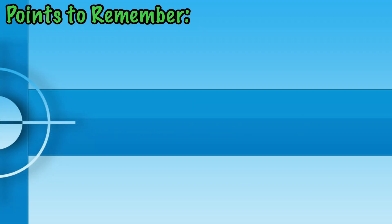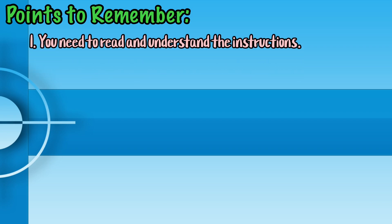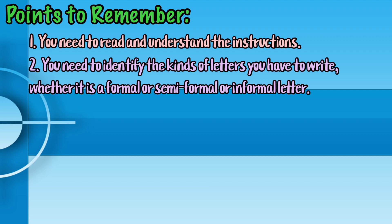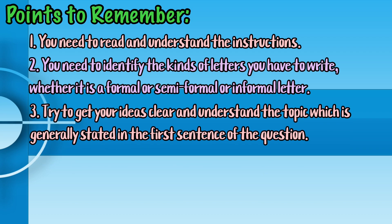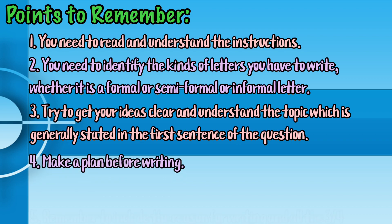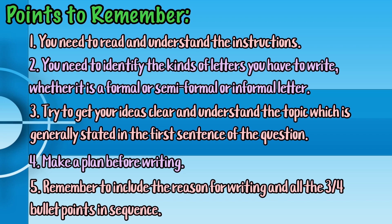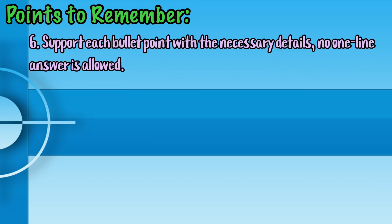Points to remember — here is the checklist you should consider before answering the general IELTS Task 1 question: 1. Read and understand the instructions. 2. Identify the kind of letter you have to write — whether it is formal, semi-formal, or informal. 3. Get your ideas clear and understand the topic, which is generally stated in the first sentence of the question. 4. Make a plan before writing. 5. Remember to include the reason for writing and all three bullet points in sequence. 6. Support each bullet point with the necessary details — no one-line answer is allowed.